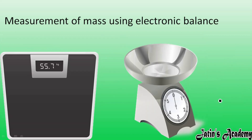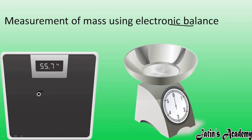Next we have measurement of mass using an electronic balance. You might have seen this kind of balance in shops. We place the object on the electronic balance and it shows an electronic reading. For example, if the object weighs 55.7 kg, the reading will display that directly. It is more efficient and more accurate compared to a beam balance, and nowadays we mostly use electronic balances.